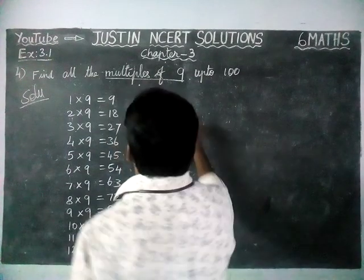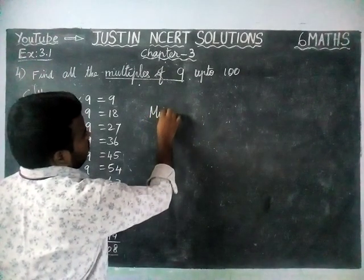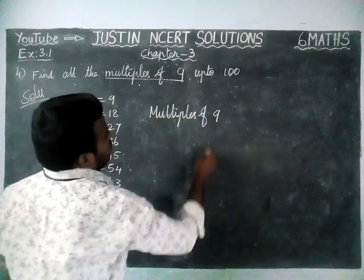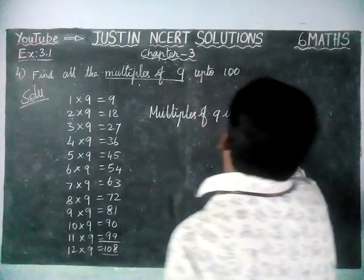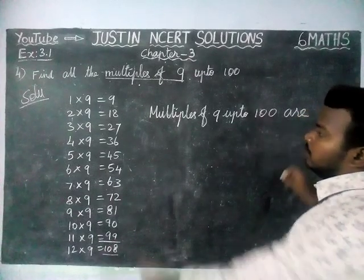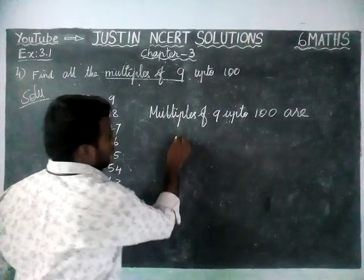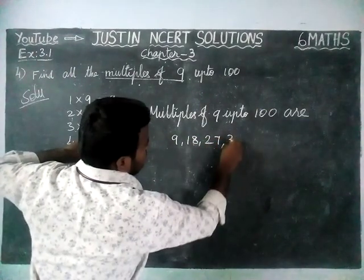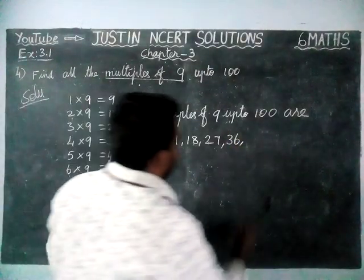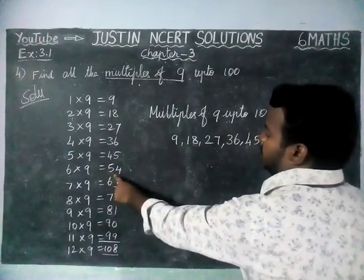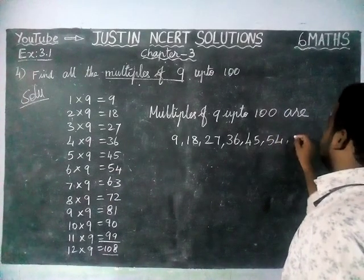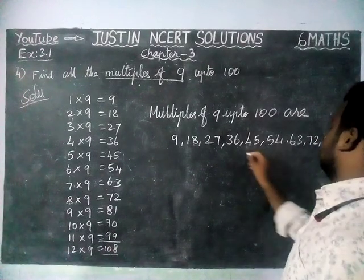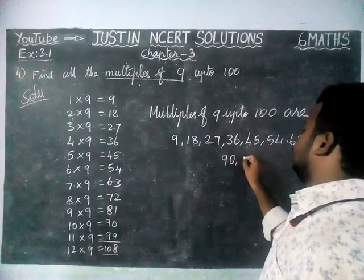Multiples of 9 up to 100: 9, 18, 27, 36, 45, 54, 63, 72, 81, 90, 99.